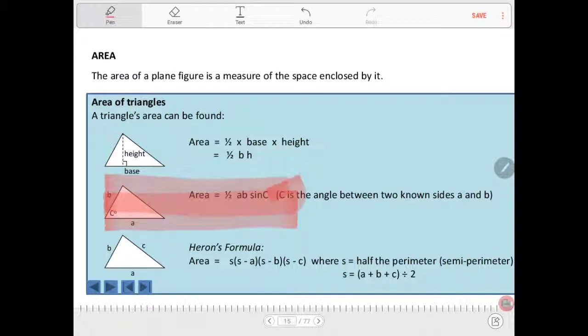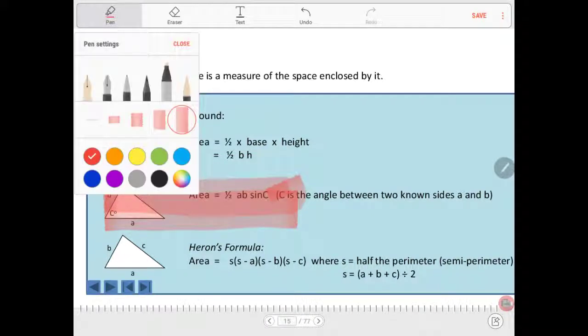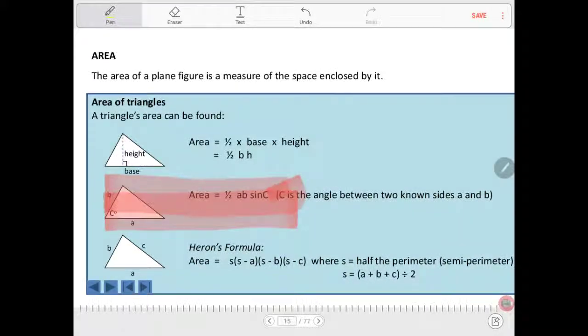Now if we've got two sides of a triangle, so if we know this side and this side, and the angle that's in between them, then we can use this formula to find the area of the triangle. And this involves sine. So you might have seen sine in the past when you were doing trigonometry.